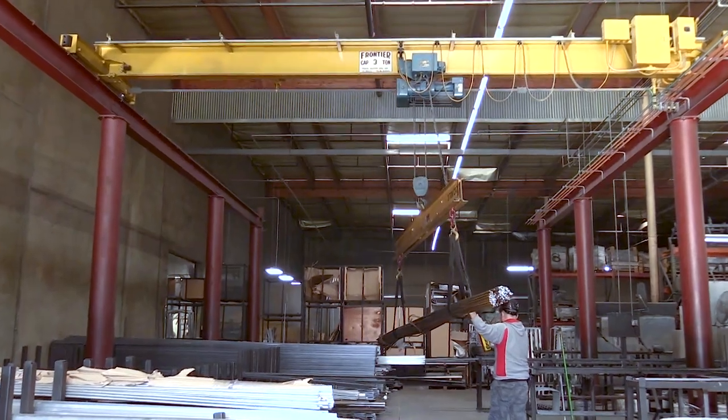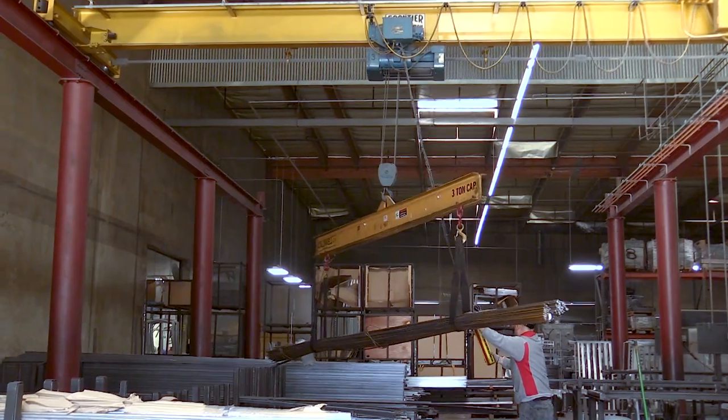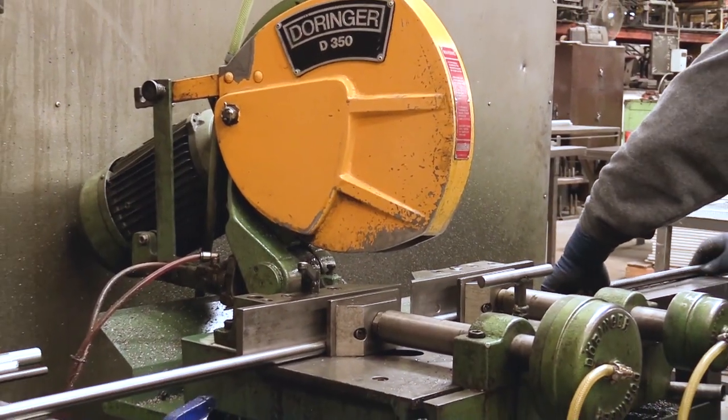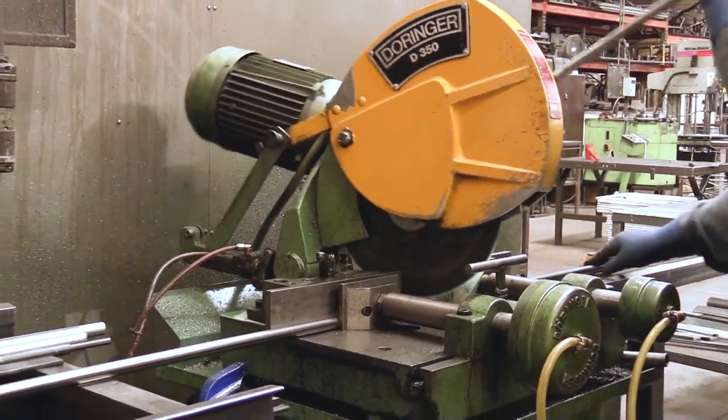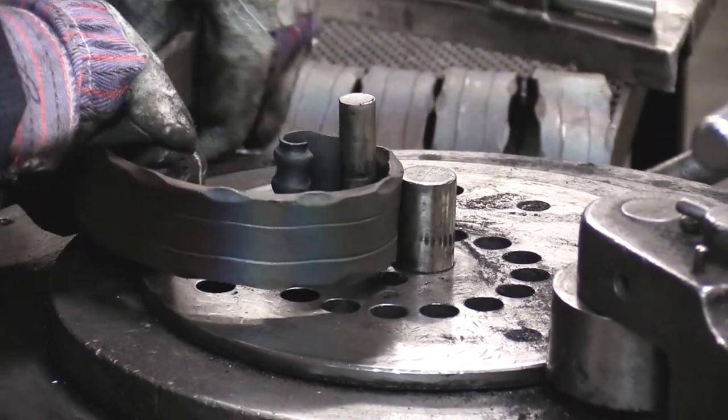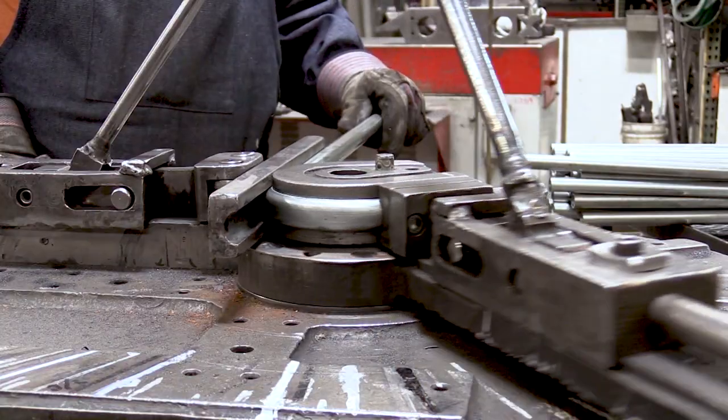Raw materials arrive at the O.W. Lee factory daily to allow continuous production of furniture and accessories. Materials are individually measured and precision cut to ensure a smooth and accurate fit. Steel and aluminum pieces are then formed by hand using a variety of customized jigs and machinery.